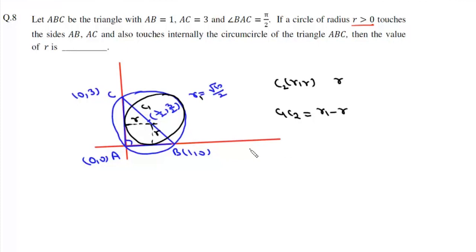Now C₁C₂ is √[(R - 1/2)² + (R - 3/2)²], and it will be equal to √10/2 minus R.